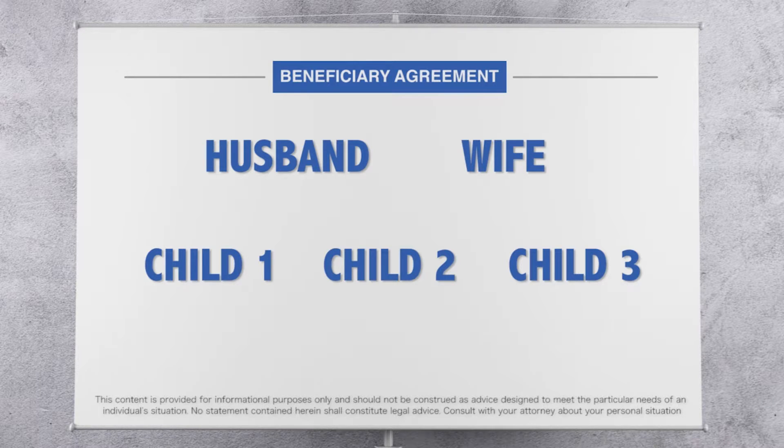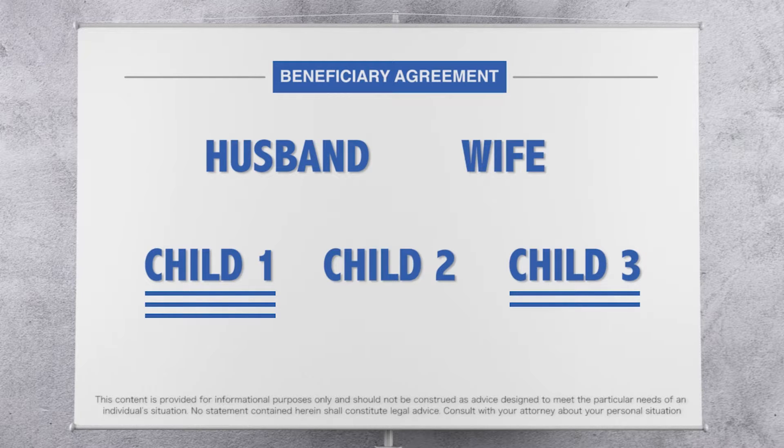You may choose to divide the proceeds of your life insurance policy evenly between the three children — a third, a third, and a third. But here's something else to consider: what if your children have children of their own — your grandchildren? Let's say child one has three children, child two has no children at all, and child three has two children, meaning you have a total of five grandchildren.